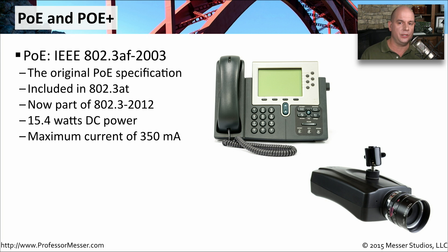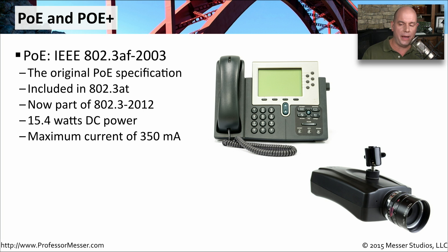The original Power over Ethernet standard was called IEEE 802.3af. This was created in 2003 and was later wrapped into the updated Power over Ethernet standard 802.3at. Power over Ethernet is now part of the Ethernet standard, and as of the 2012 version of 802.3, it has all been wrapped into that single standard. This original Power over Ethernet provided 15.4 watts of DC power and a maximum current over that connection of 350 milliamps.